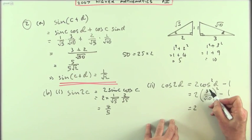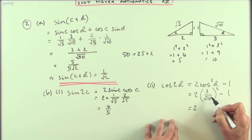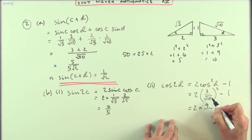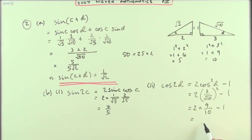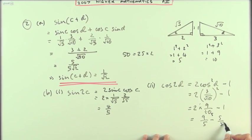Square a fraction, it means you square the numerator and square the denominator, square the top, 9. Square the bottom, root 10 times root 10, out pops the 10 again, minus 1. So that's going to give me 9 fifths instead of 18 tenths. I'll just go straight into 9 fifths. And 9 fifths take away 1 is the same as 9 fifths, so I'll put it down, take away 5 fifths, which is once again 4 fifths.